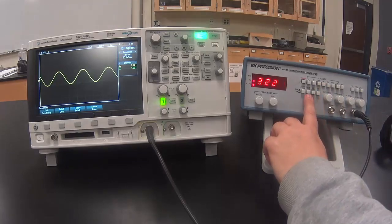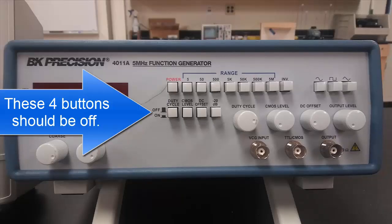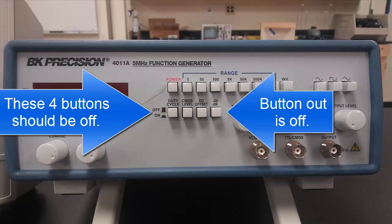There are four buttons on the function generator down here. For anything we're doing they should just be in the off position. Off is out.